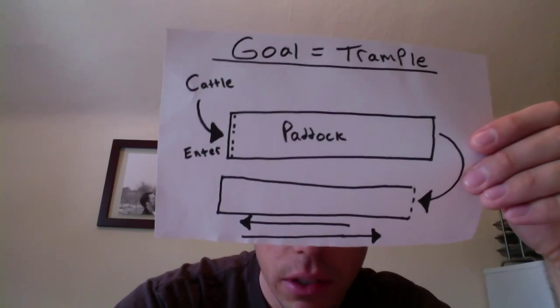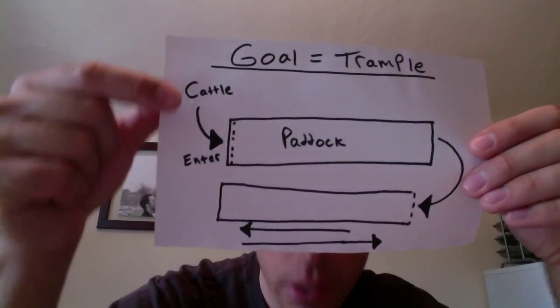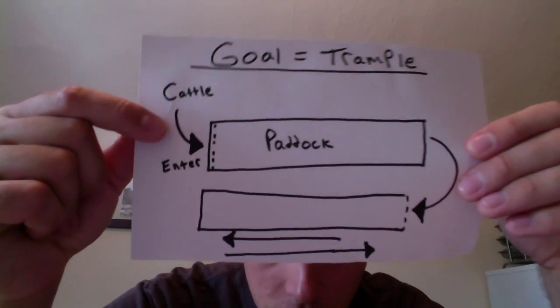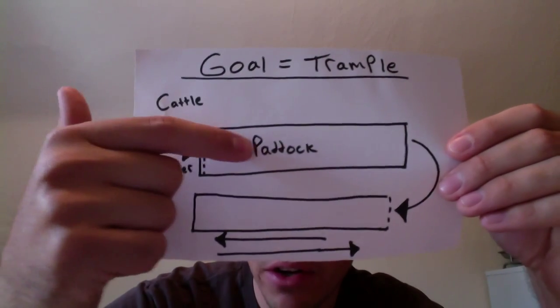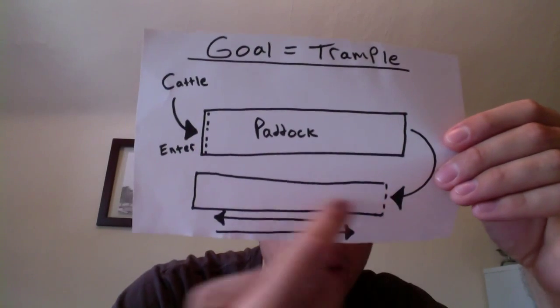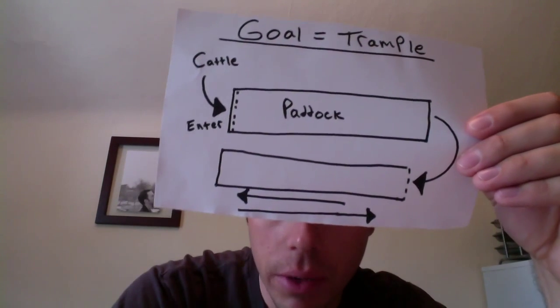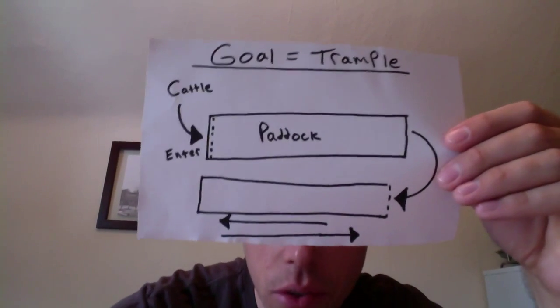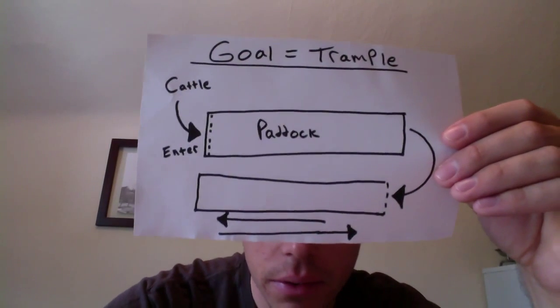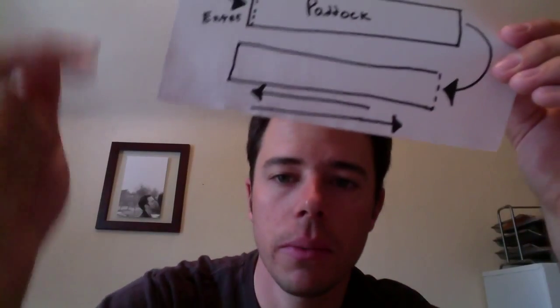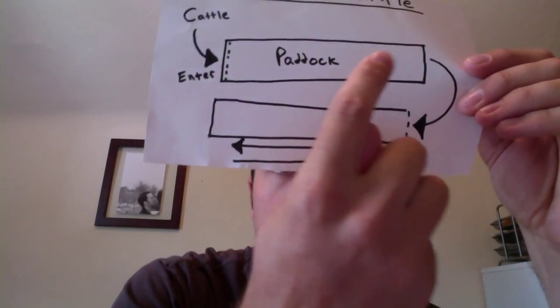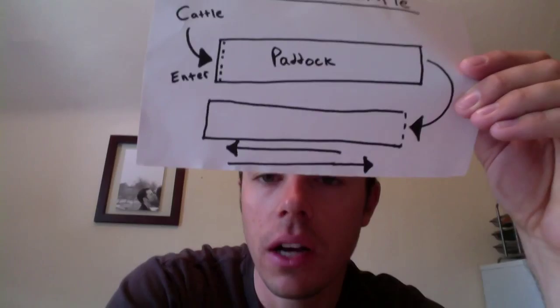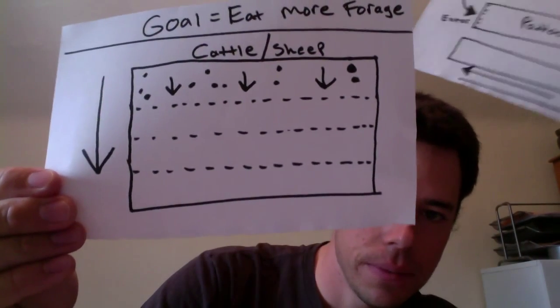However, you can get the best of both worlds by using this goal of trampling and having your cattle enter from here by moving them more frequently. Because they're going to be trampling so much of this grass on the ground, you need to move them more because they're not utilizing the feed as efficiently as they would on a situation like this.